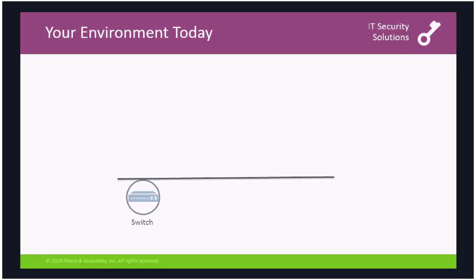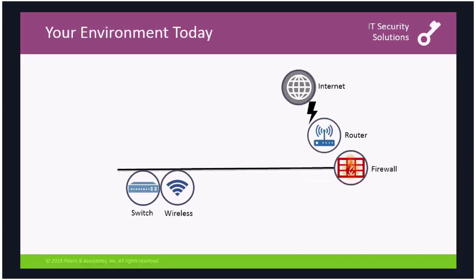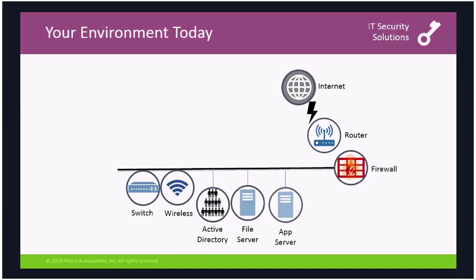Let's all get grounded in the fact that we all probably have a network, and that network has some switch infrastructure on it — we're basically chartered to connect things to it. Building out more infrastructure, we might have some wireless in our environment. You're connected to the Internet, presumably through a router and some service. You have a firewall doing some of the protection. If you're like any organization, you have an Active Directory, a file server, an app server, and a SQL server.